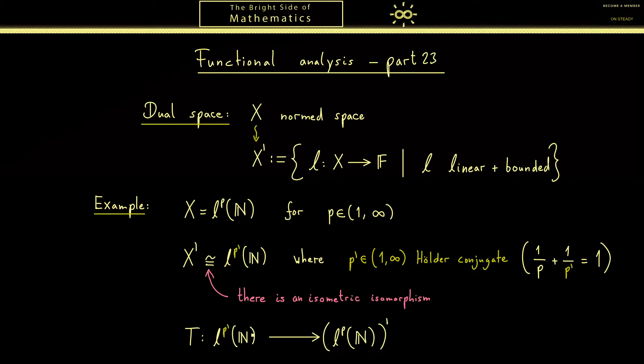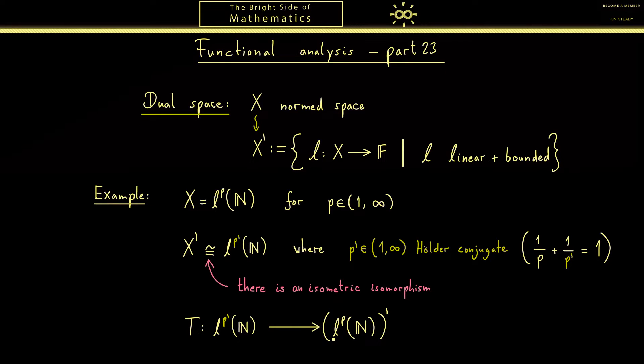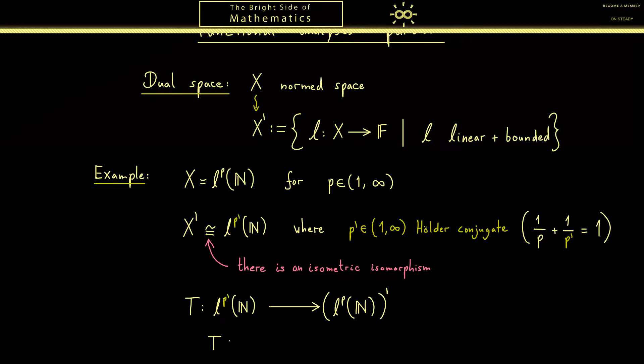Let's see how we can define such an isomorphism maybe from the right hand side to the left hand side. So we take a sequence from Lp' and send it to a linear operator with domain Lp. For this let's call the sequence from Lp' just x and then Tx is a linear operator on Lp. So we can put in a sequence from Lp which we call y. Now comes the definition and keep in mind what comes out here has to be a number in F. So we have the infinite sum the series and we put in xk times yk.